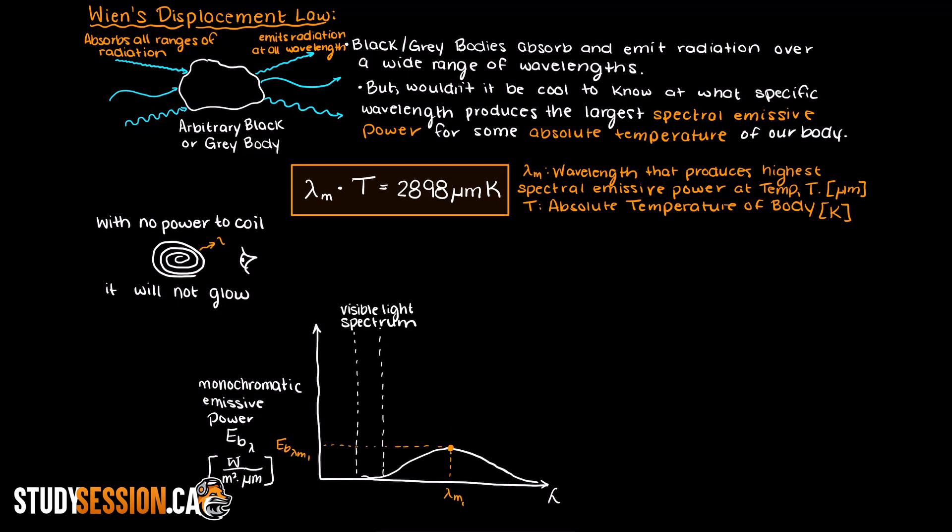So as we can see here our emission curve is relatively wide and clearly not in the visible light spectrum, which I have denoted here.